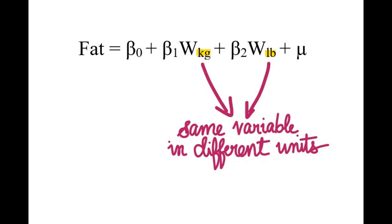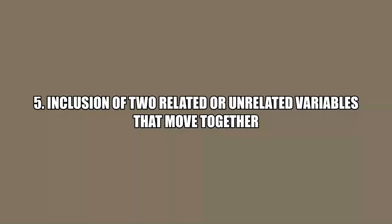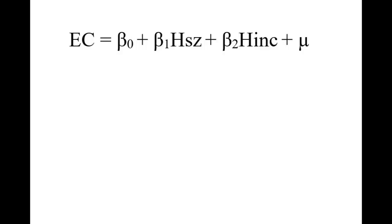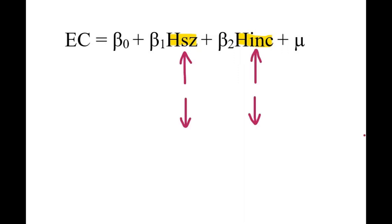The next reason is including two related variables or two unrelated variables that move together. For example, in a model that indicates electricity consumption as a function of household income and size of the house, the size of the house they live in has a direct relationship with the family's income. If a family's income is more, they will be living in a larger house than a family that earns less. So in this case, there will be multicollinearity in the model.